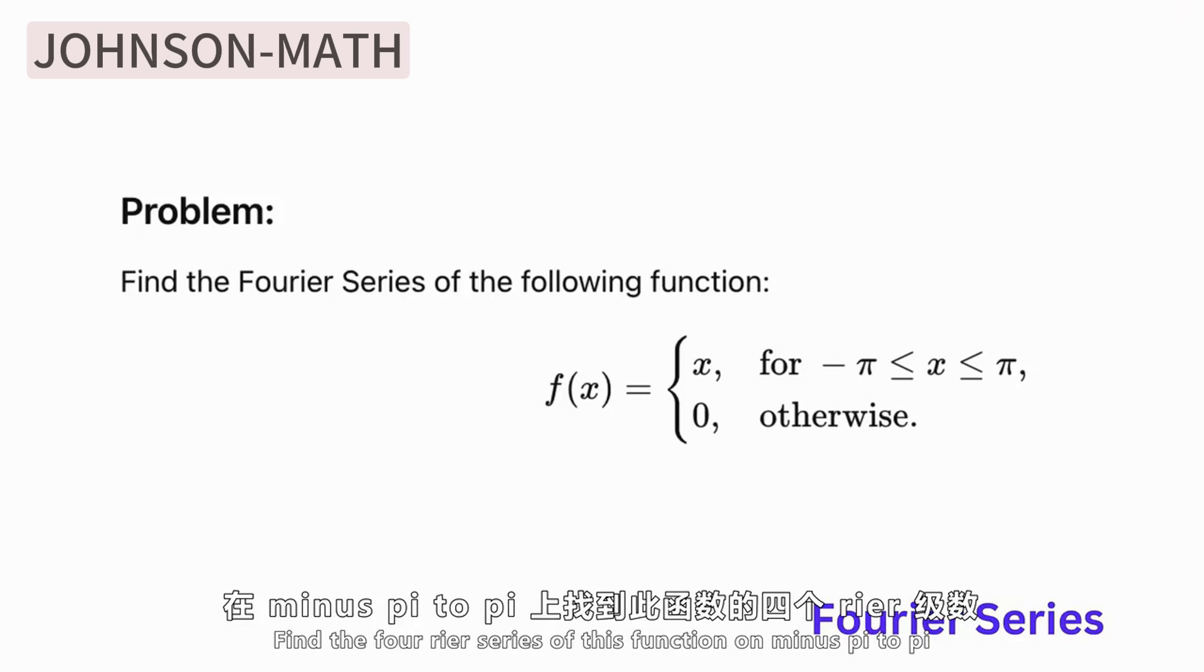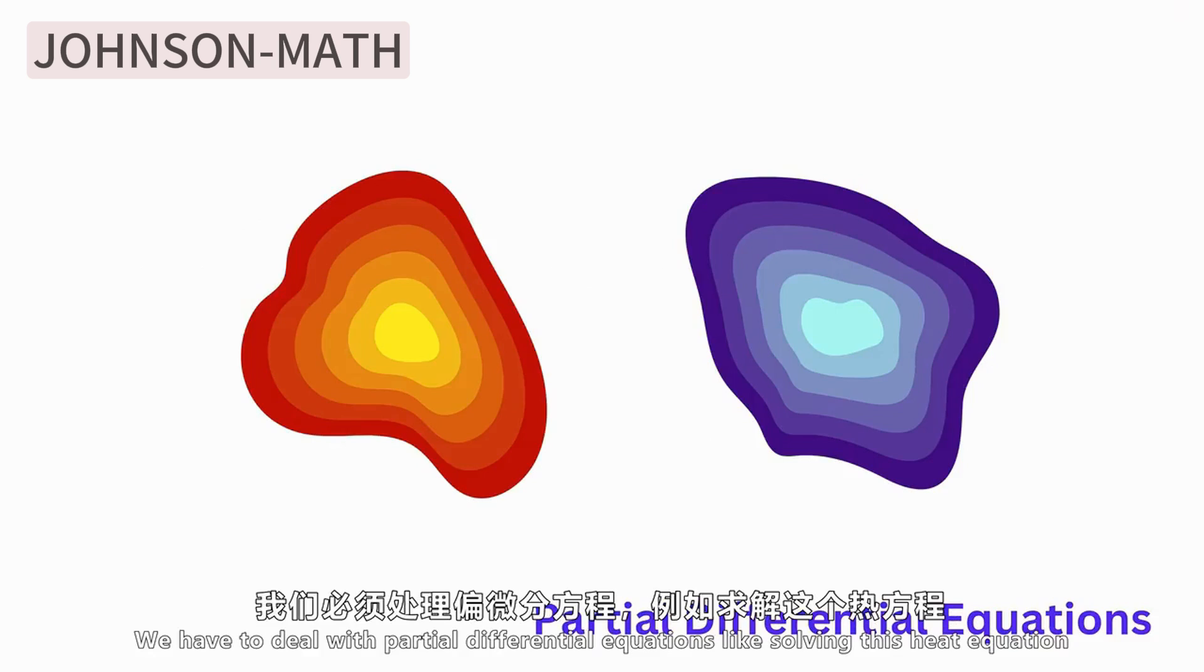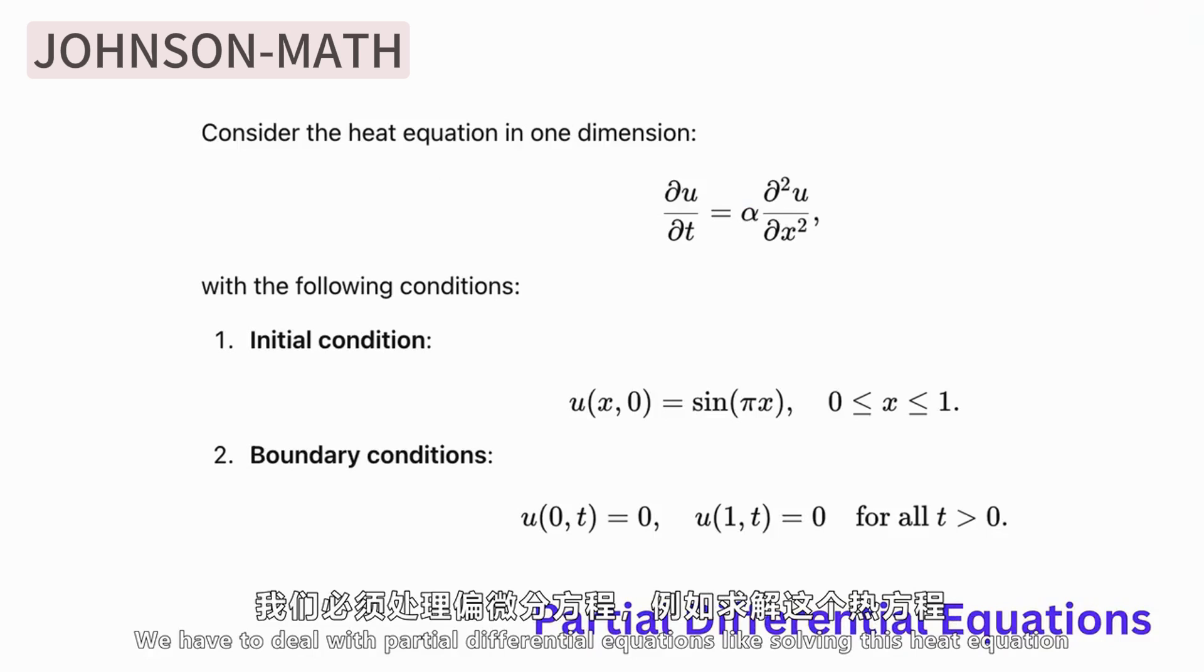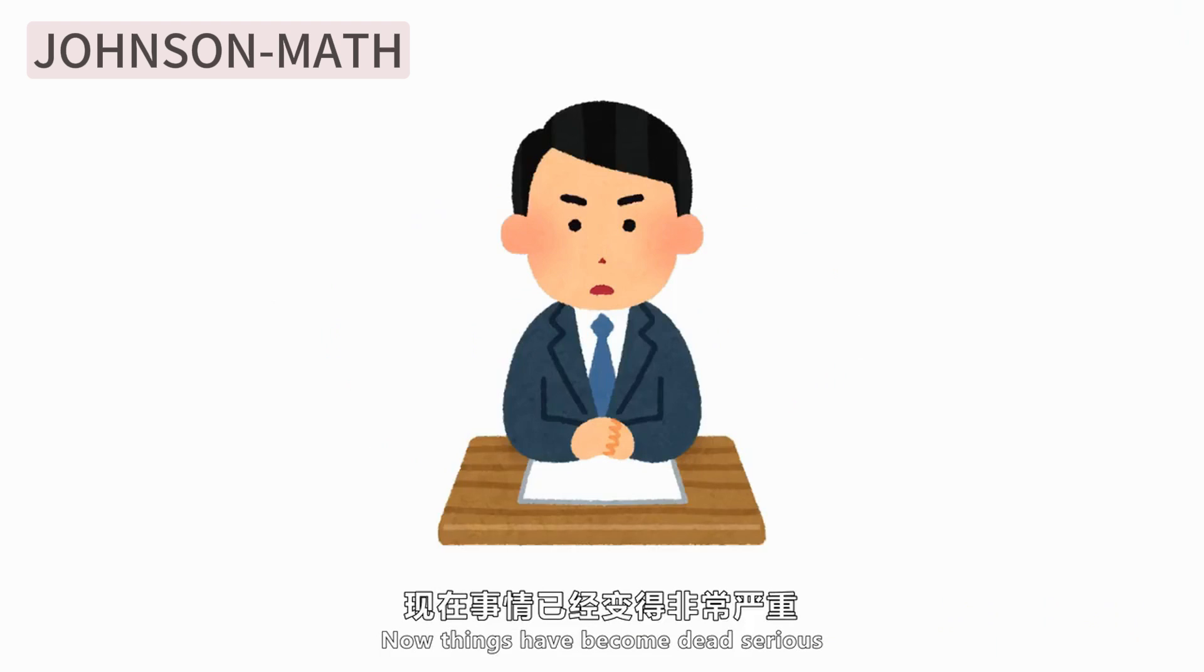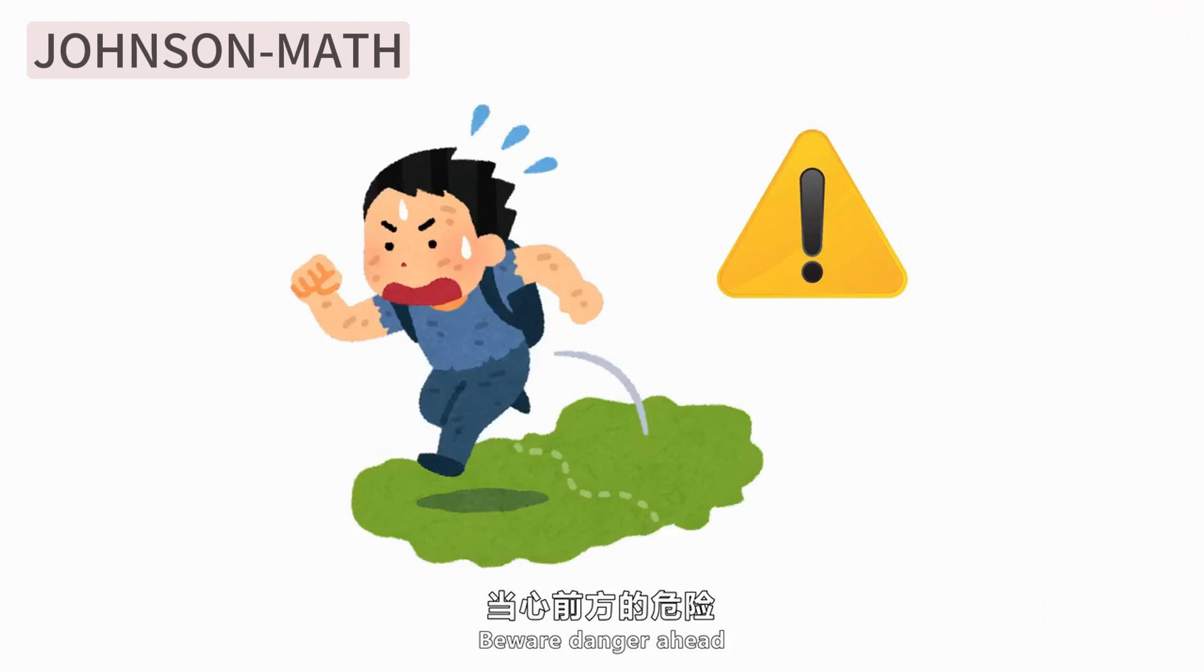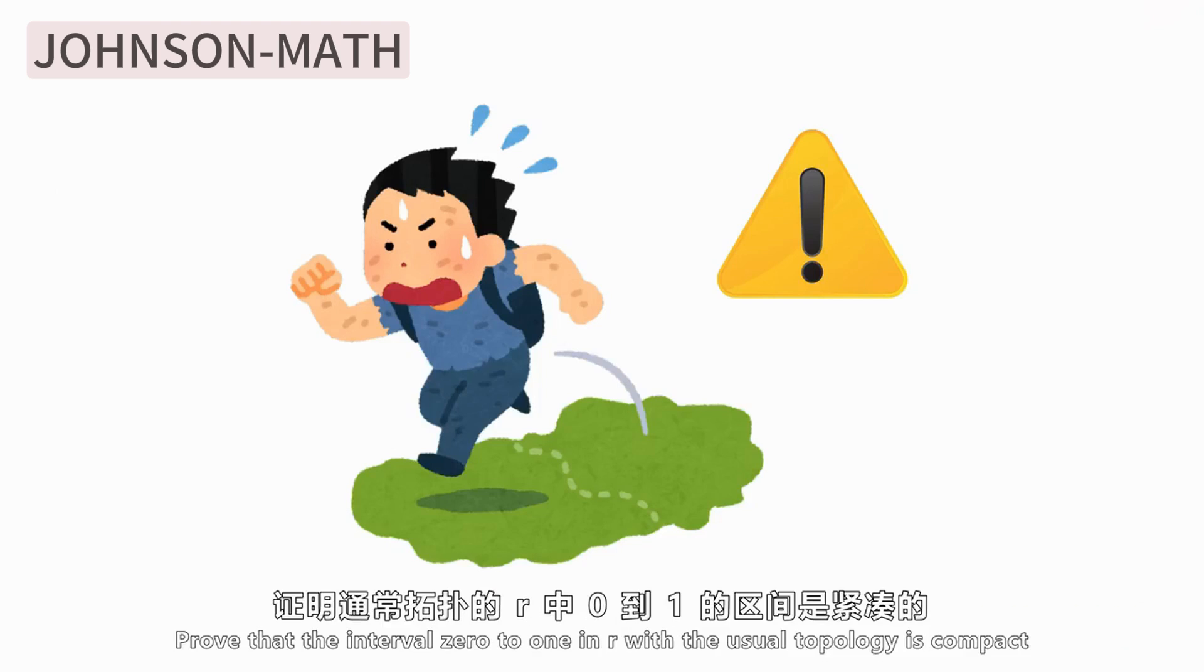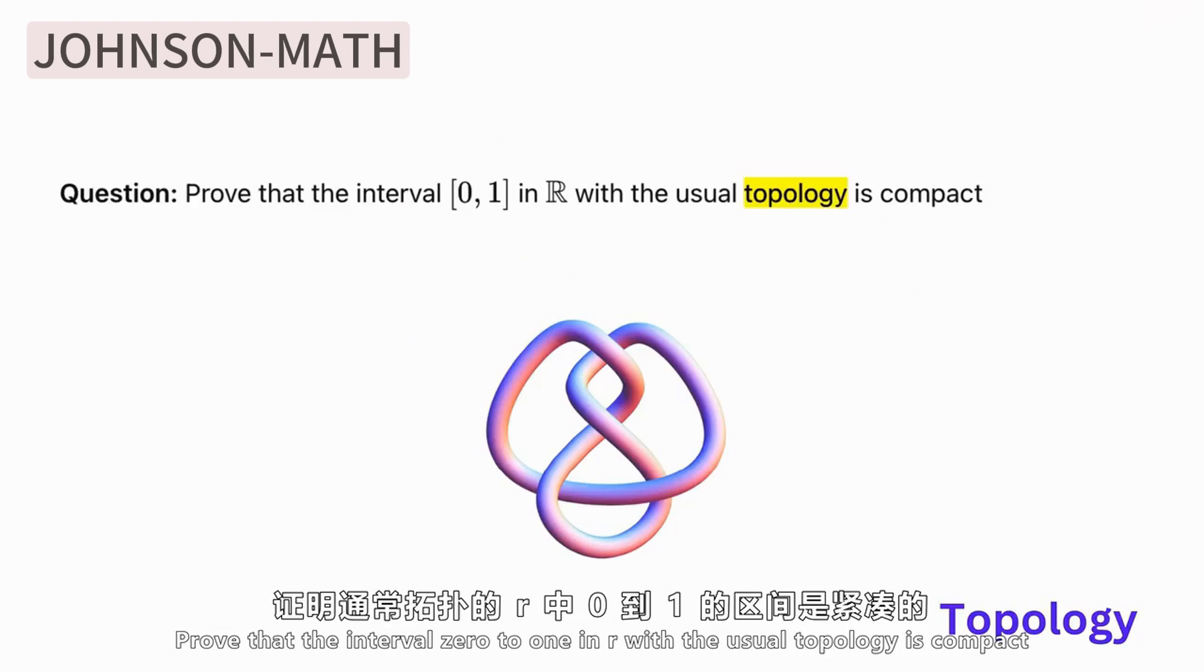Now in Level 45, we have to deal with partial differential equations like solving this heat equation. Then in Level 46, we get into topology. Now things get really serious. Beware of the danger ahead. Prove that in the usual topology, the closed interval [0,1] is compact but the open interval (0,1) is not.